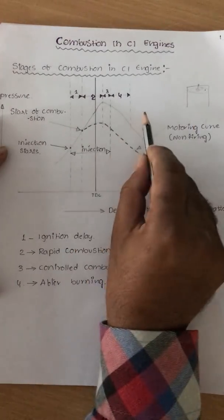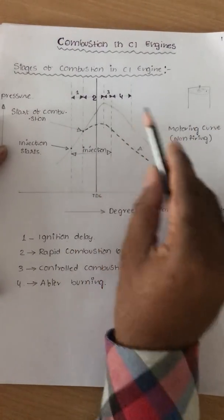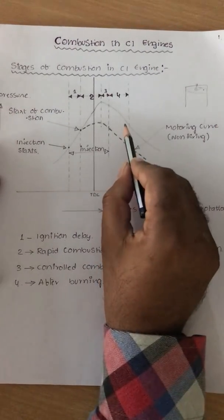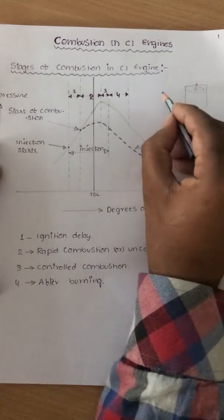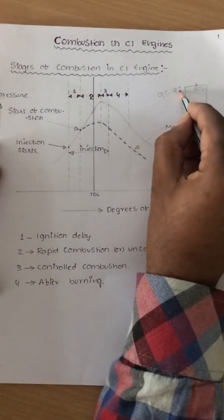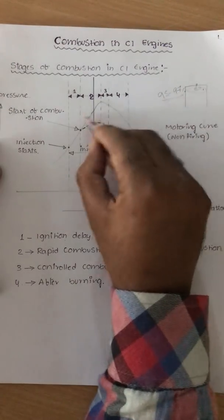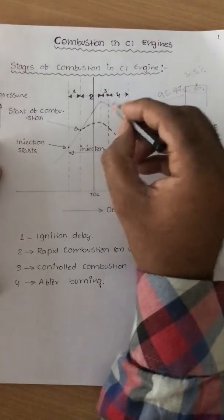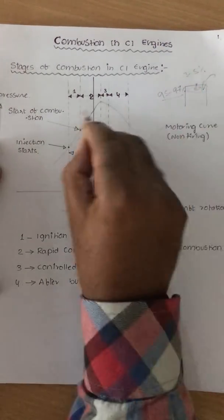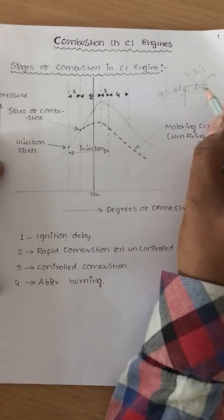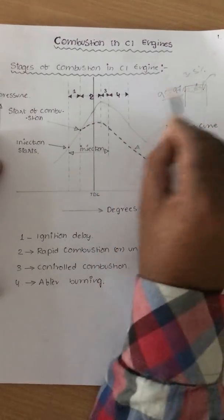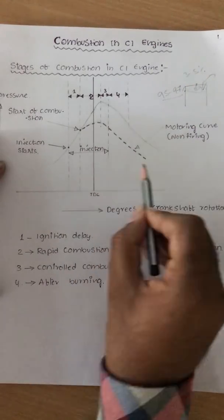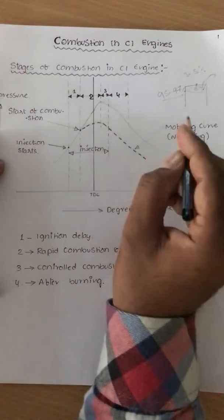Even after the fourth stage of combustion, we cannot conclusively say that 100% of the fuel is utilized during combustion. Only 95 to 97% of the fuel is utilized in the combustion process. The remaining 3 to 5% of the fuel is wastage and goes into the exhaust without participating in the combustion process — meaning 3 to 5% of the fuel does not generate heat.